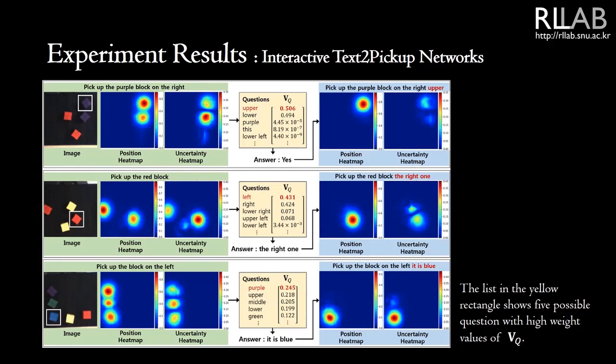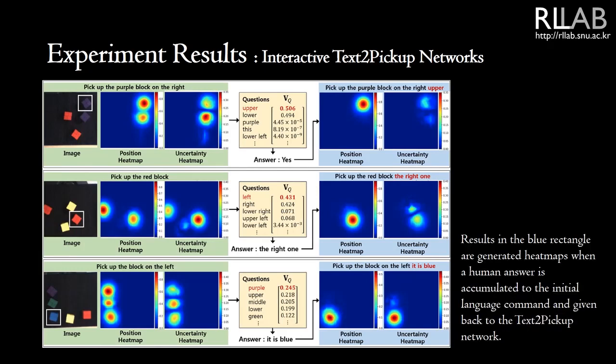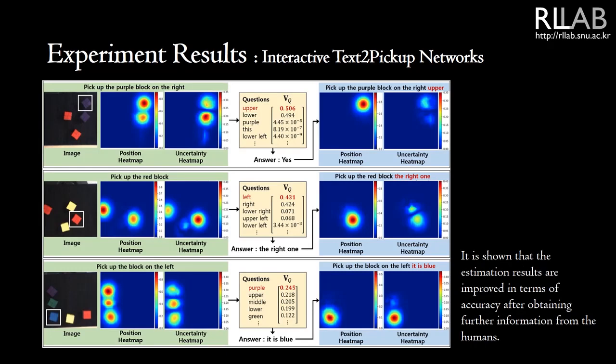The list in the yellow rectangle shows five possible questions with high weight values. The question whose weight value is the highest is selected and asked to the human user. Results in the blue rectangle are generated heatmaps when a human answer is accumulated to the initial language command and given back to the text-to-pickup network. It is shown that the estimation results are improved in terms of accuracy after obtaining further information from the humans.